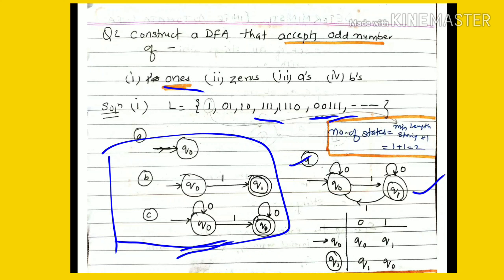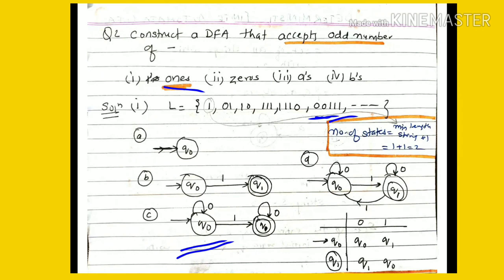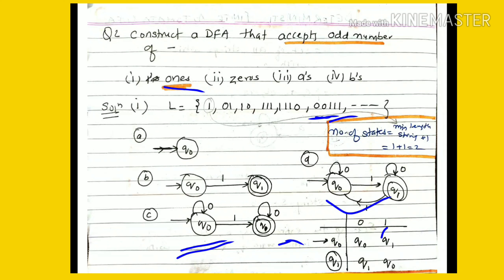The formal definition of this DFA: Q (set of states) = {Q0, Q1}; Sigma (input alphabet) = {0, 1}; initial state q0 = Q0; set of final states F = {Q1}; and the transition function delta is defined by the transition table: Q0 on '0' → Q0, Q0 on '1' → Q1, Q1 on '0' → Q1, Q1 on '1' → Q0.